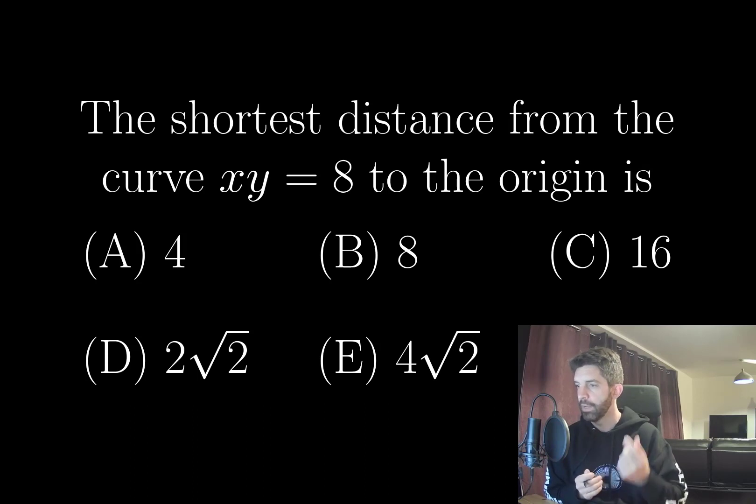Take an arbitrary point on this curve, call it x, y. The square of the distance to the origin is x squared plus y squared. And then minimize that subject to the constraint that xy equals 8.